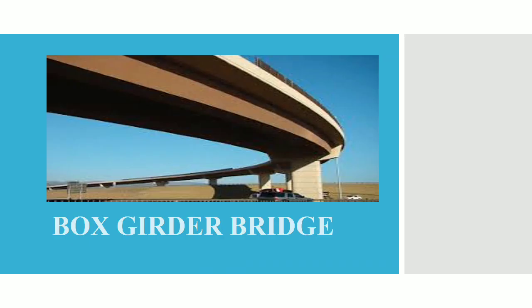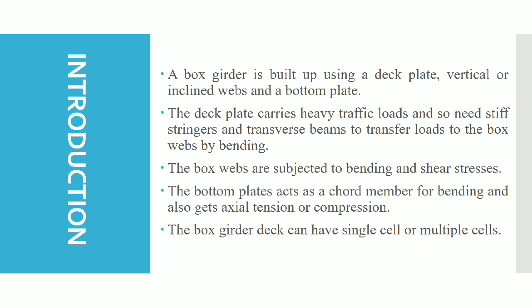A box girder bridge is built up using a deck plate, vertical or inclined webs, and a bottom plate. The deck plate carries heavy traffic loads, so it needs stiff stringers and transverse beams to transfer the load to the box web by bending. The bottom plates act as a chord member for bending.